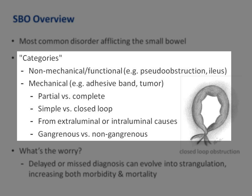In a simple obstruction, the small intestine is occluded at a single point, resulting in intestinal dilatation, hypersecretion, and bacterial overgrowth proximal to the obstruction and decompressed bowel distally. Closed-loop obstruction happens when a loop of distended bowel twists on its mesenteric pedicle with two points of bowel obstructed and no proximal or distal outlet, as depicted in the figure.